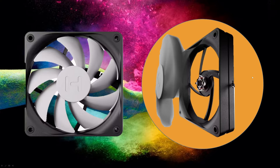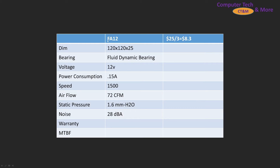It's time to reach for the greatest heights with the brand new Height FA12, Height's budget option fan. A little bit of spec information: the FA12 is a 120mm class fan, 25mm thick, flow dynamic varying, 1.5 amps, maximum speed is 1,500 RPM, airflow is 72 CFM, 1.6 minimum inches of H2O, and noise level is 28 decibels.